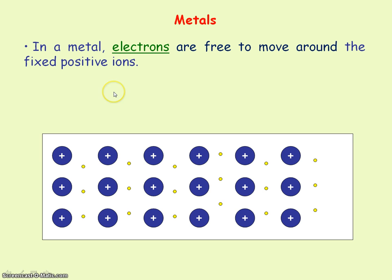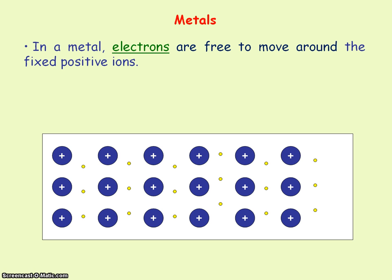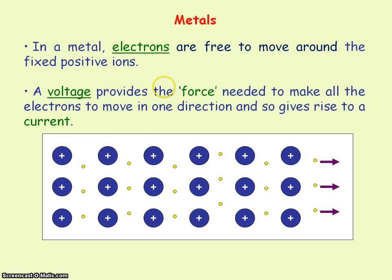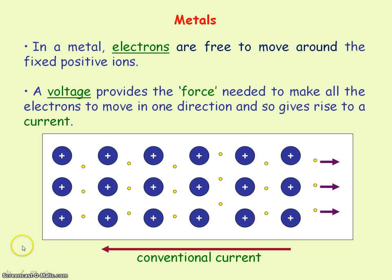In metals, it's the electrons that are free to move around the fixed positive ions or nuclei — the nuclei are stationary and electrons are free to move, so they are the charge that flows when we have a current. What's needed to get a current is a voltage, because the voltage provides a force on the electrons to make them move in one direction, giving rise to the current. Remember, conventional current is in the opposite direction to which the electrons flow.